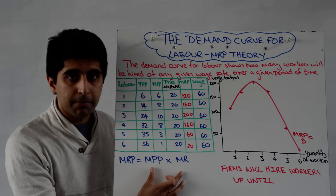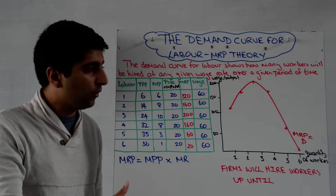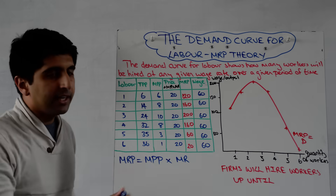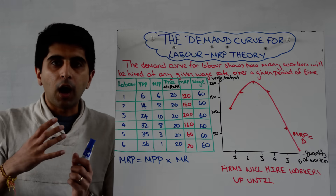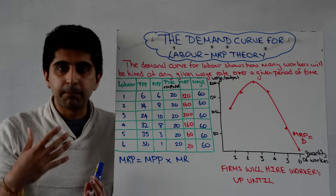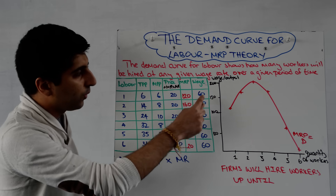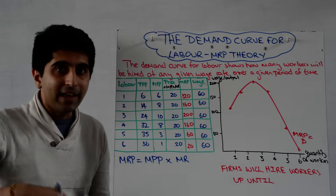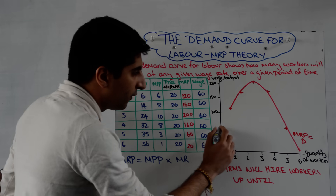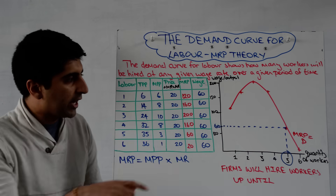You need to be able to calculate MRP, draw it, and understand why it's shaped this way. The wage rate here is £60, and we assume firms are operating in a perfectly competitive labour market — meaning they are wage takers with no control over the wage they pay. They must take the wage rate set in the industry labour market, hence the wage rate is constant at £60 for every worker. With the MRP curve as the demand curve, at a wage rate of £60, this firm should employ five workers.